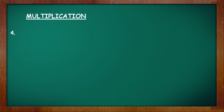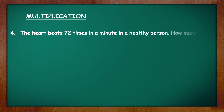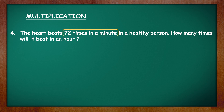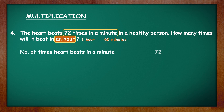Question number 4. The heart beats 72 times in a minute in a healthy person. How many times will it beat in an hour? Here we know the number of times the heart beats in a minute, but we have to calculate the number of times it will beat in an hour. So before we begin the calculation, we have to convert this hour into minutes. Let's begin with the first statement: number of times heart beats in a minute is 72. Next, write the number of minutes in one hour, which is 60.